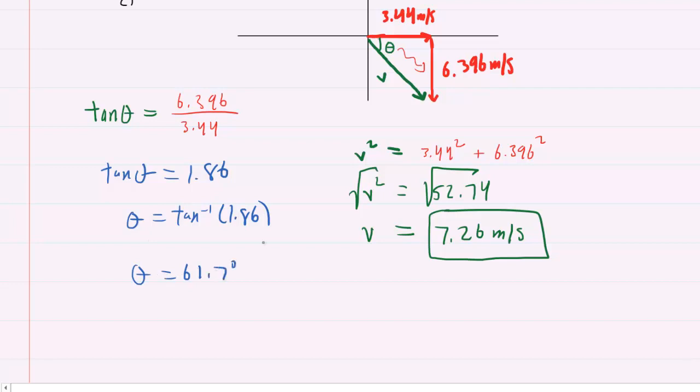And we need to be a little bit careful here, because technically, because that angle is below the positive x-axis, we have to assign a negative sign to the angle. So the final answer will be negative 61.7 degrees.